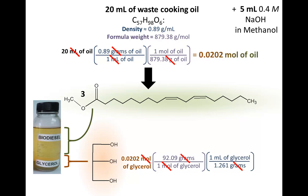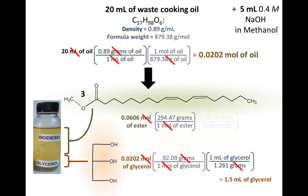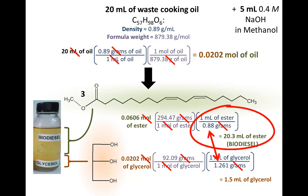Thus, 1.5 milliliters of glycerol and 20.3 milliliters of ester can be expected to form from approximately 20 milliliters of cooking oil. These calculations can then form the basis for determining the percent yield of biodiesel. The relative densities of these products can be used to identify the phases, with the lower density product, methyl linoleate, floating on the glycerol.